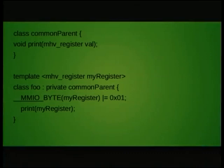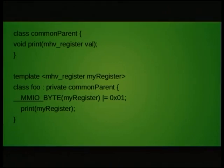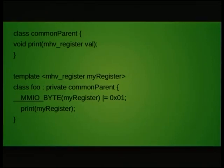Here's an example of how we do that. We have the common parent class at the top, which has a method that does something with a register. Then we have our foo class, which takes a template parameter — operating on that template parameter within its method, and also calling the common code in the parent class. All different instantiations of the foo class with different template parameters will have no code duplication on the shared logic.